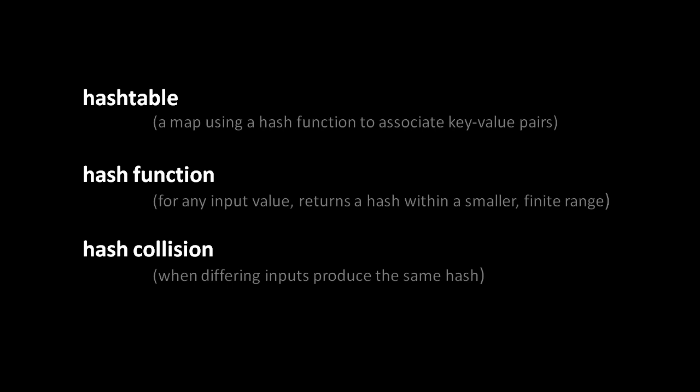A hash function is a function which takes any input value and returns an output value, a hash, which is constrained to a smaller finite range. For example, a hash function might take in any integer as input, but then the output might be constrained to a finite range like zero to 100. Because the set of possible inputs to a hash function is always larger than the possible set of outputs, inevitably multiple inputs will have to produce the same output, the same hash. When different inputs produce the same output, that's called a hash collision.